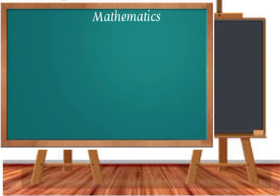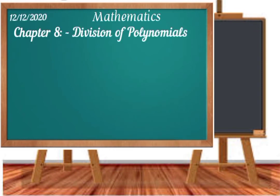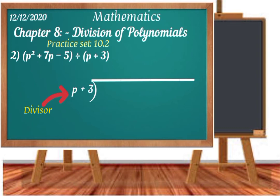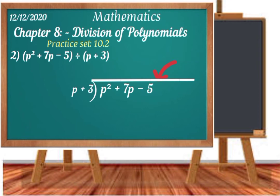Let's solve the second question of practice set 10.2. The second question says: p² + 7p − 5 is the dividend and p + 3 is the divisor. So p + 3 is the divisor and p² + 7p − 5 is the dividend. The inside number is the dividend and the outside number is the divisor.